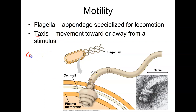Chemotaxis is the movement away from or toward a particular chemical signal. They may move towards nutrients or oxygen — that's called positive chemotaxis. Or they may move away from a toxic substance, and that's called negative chemotaxis. The way that chemotaxis is performed is carried out using a flagella.